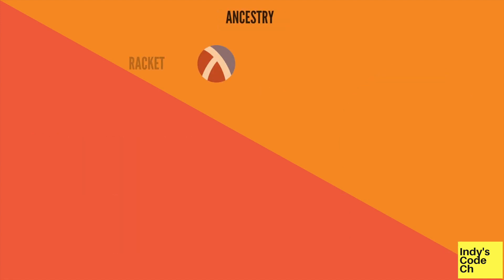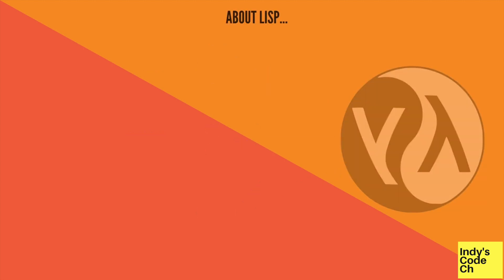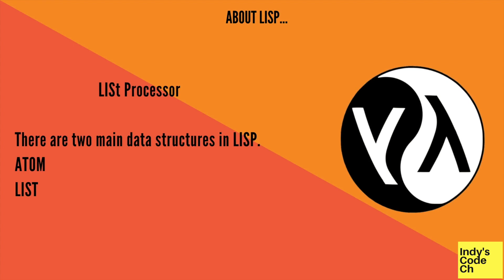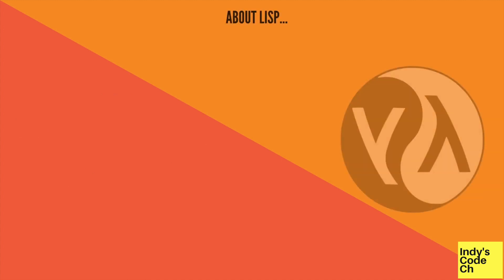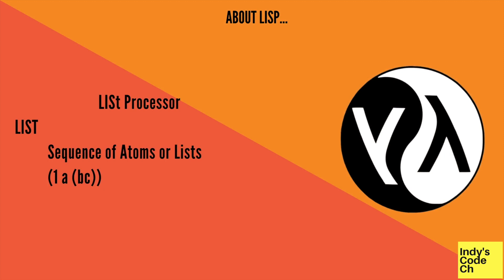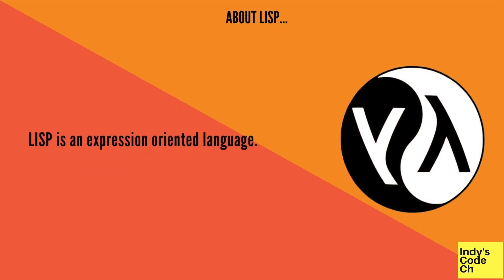Lisp is the grandmother of many modern languages — Racket, Scheme, Clojure. There are two main data structures: an atom and a list. An atom is either a number or a symbol. A list is a sequence of items, each of which can be an atom or a list.